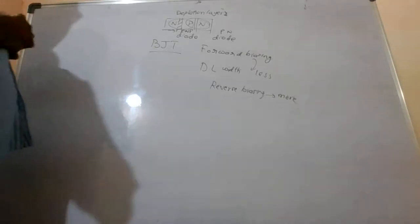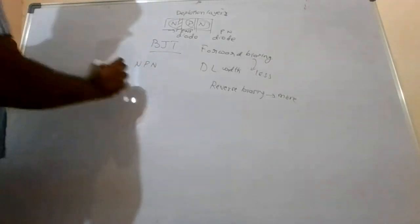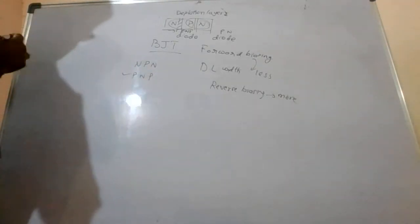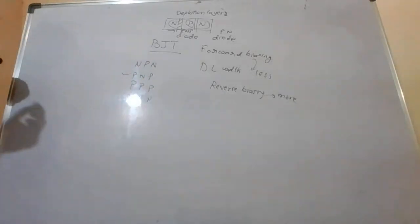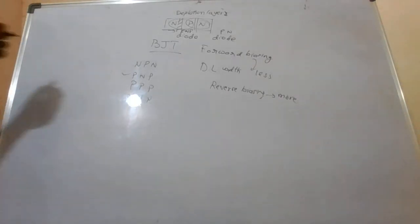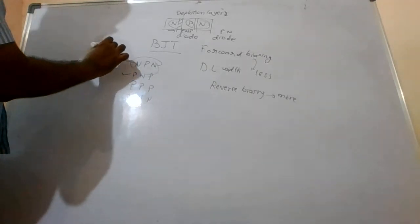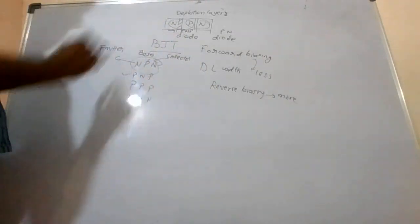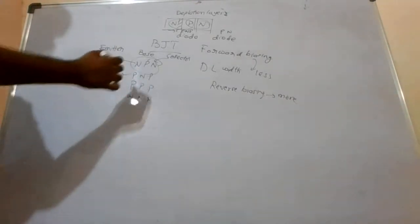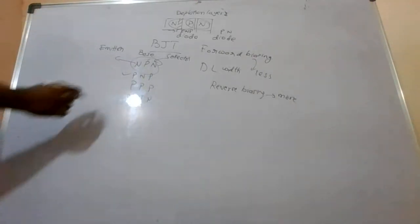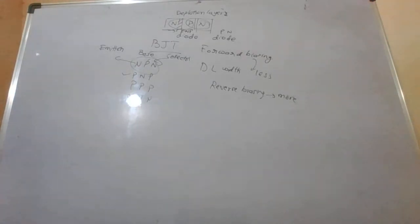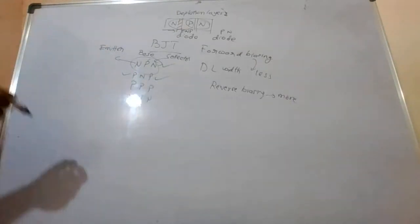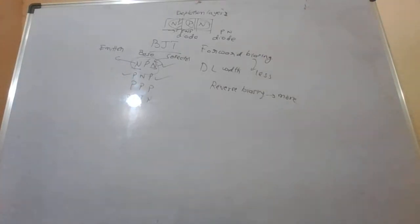We have NPN type and another type is PNP. Can we have PPP or NNN? No — in NPN, the emitter emits electrons and the collector catches electrons. If all regions are P-type, there are only holes and no electrons to flow, so conduction can't happen. That's why we only have these two types of transistors.